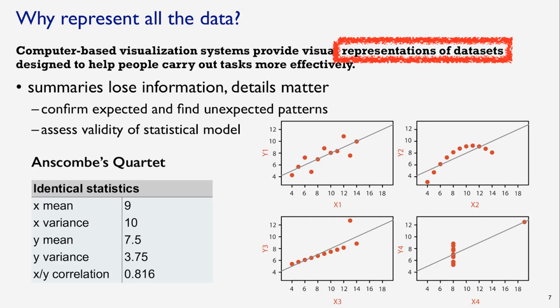Why represent all the data? You could summarize it with statistical summaries, but the problem is that summaries lose information, and the details do matter. This dataset is a famous and widely used example in data visualization communities that illustrates why visualization is more powerful than statistical summaries. This is Anscombe's Quartet.